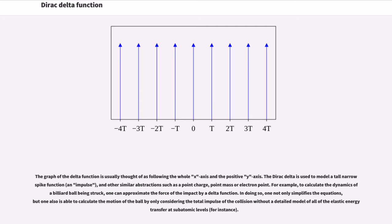The graph of the delta function is usually thought of as following the whole x-axis and the positive y-axis. The Dirac Delta is used to model a tall narrow spike function — an impulse — and other similar abstractions such as a point charge, point mass, or electron point.